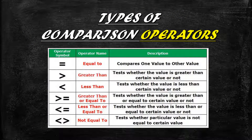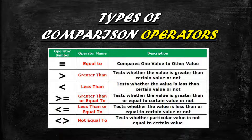Coming to the types of comparison operators: equal to compares one value to another; greater than tests whether a value is greater than a certain value; less than tests whether a value is less than a certain value; greater than or equal to tests whether a value is greater than or equal to a given value; less than or equal to tests whether a value is less than or equal to a given value; and not equal to tests whether a value is not equal to a certain value.